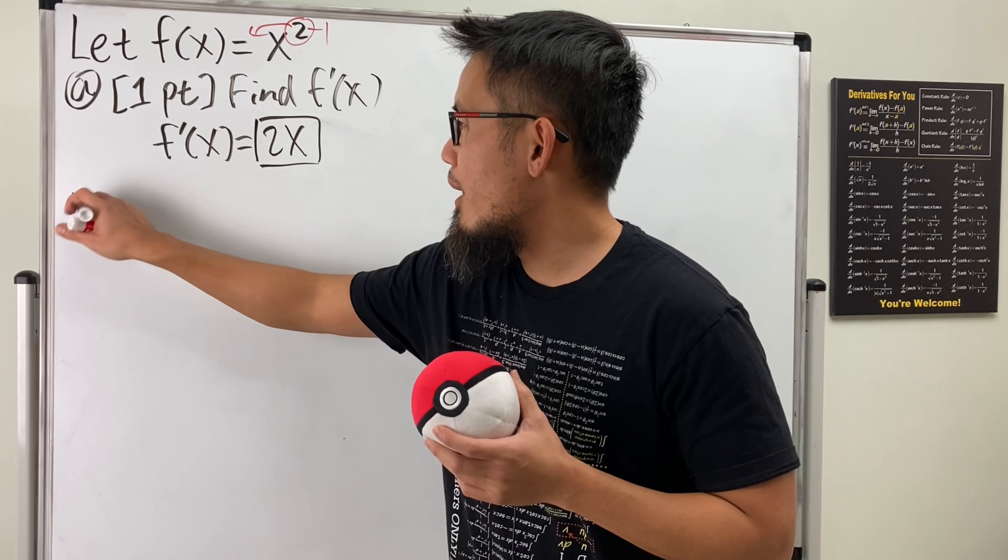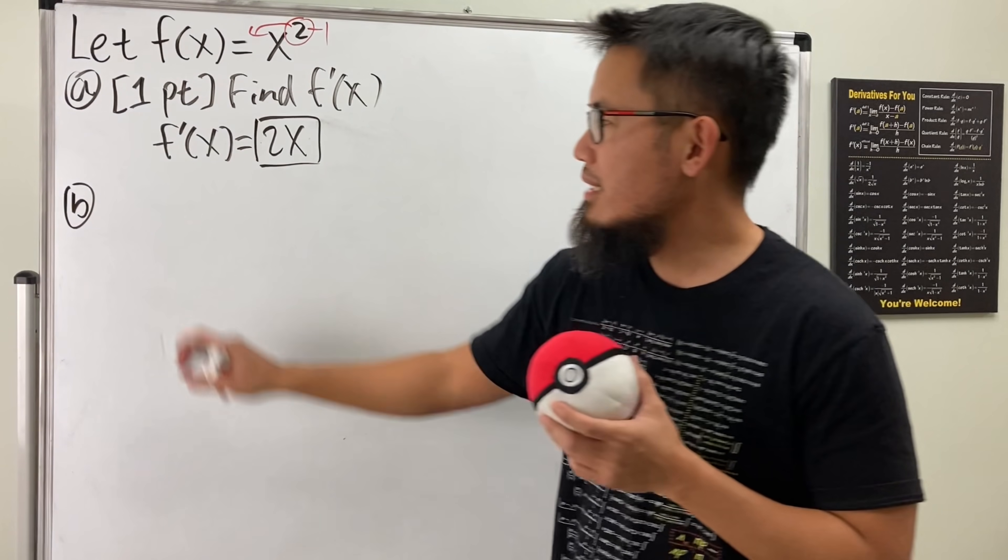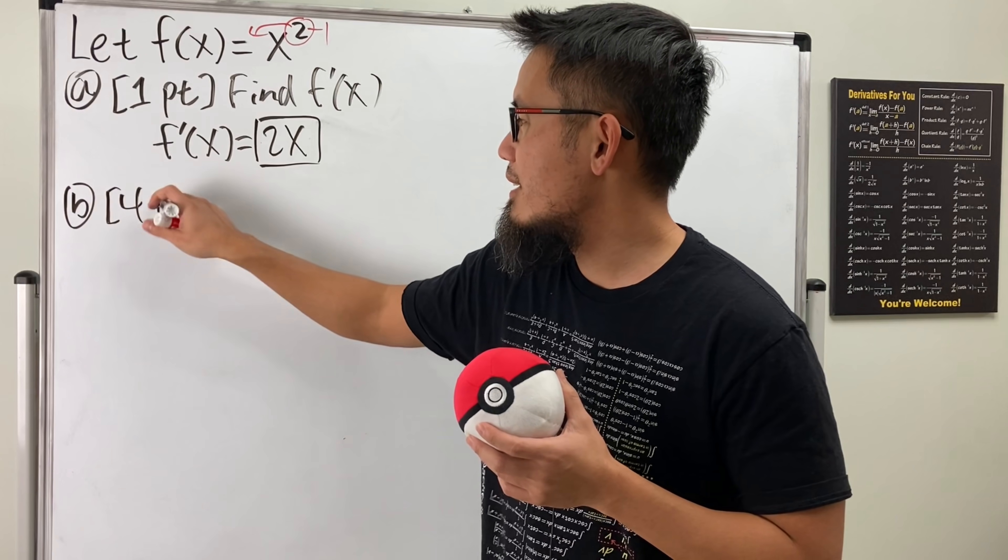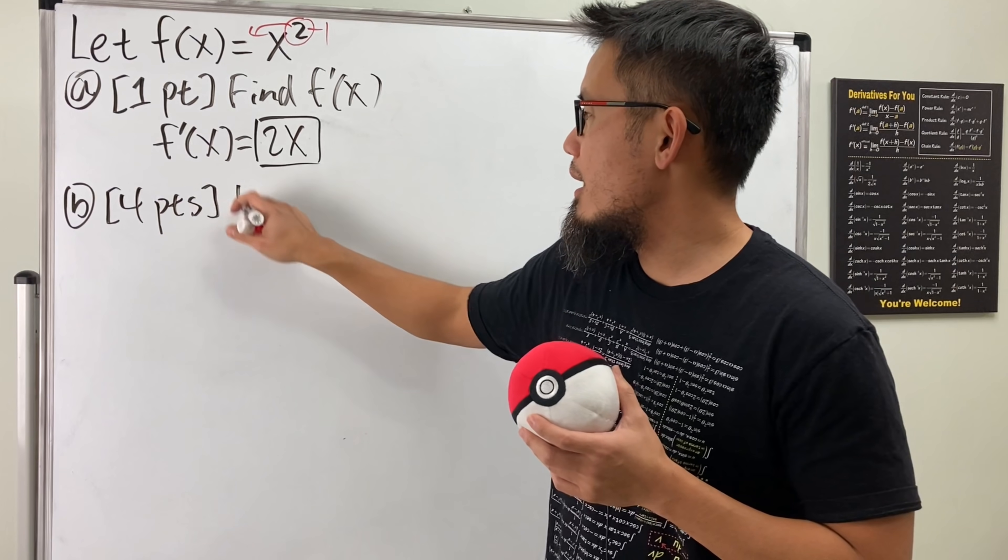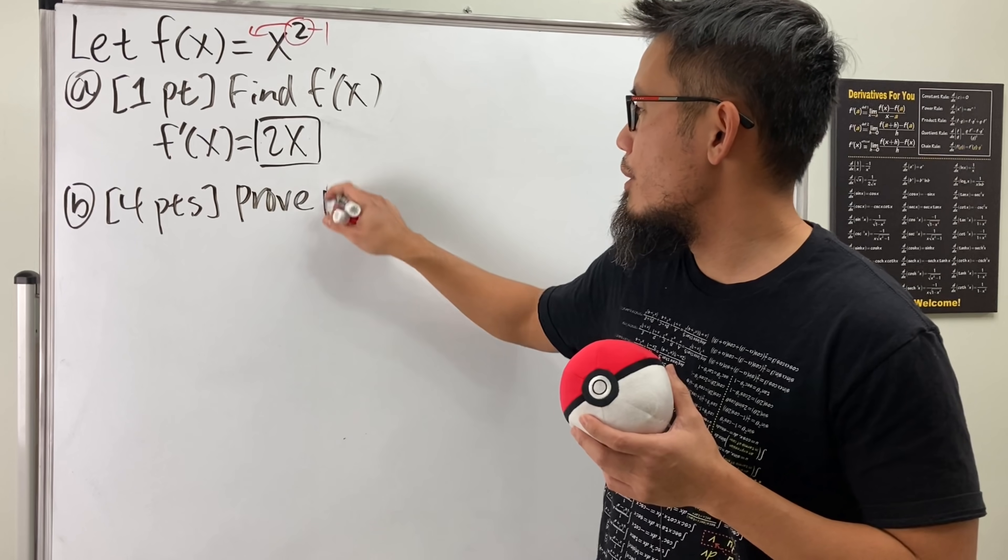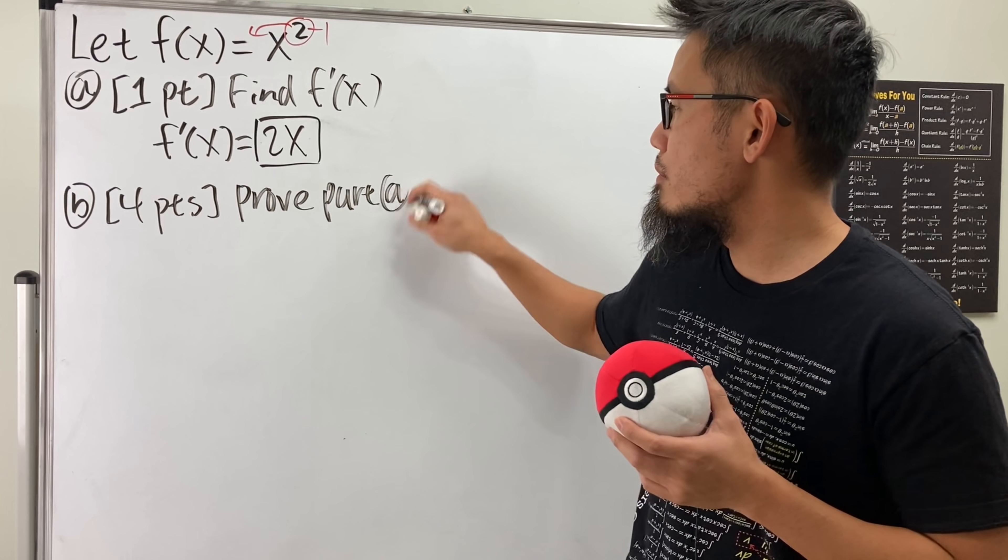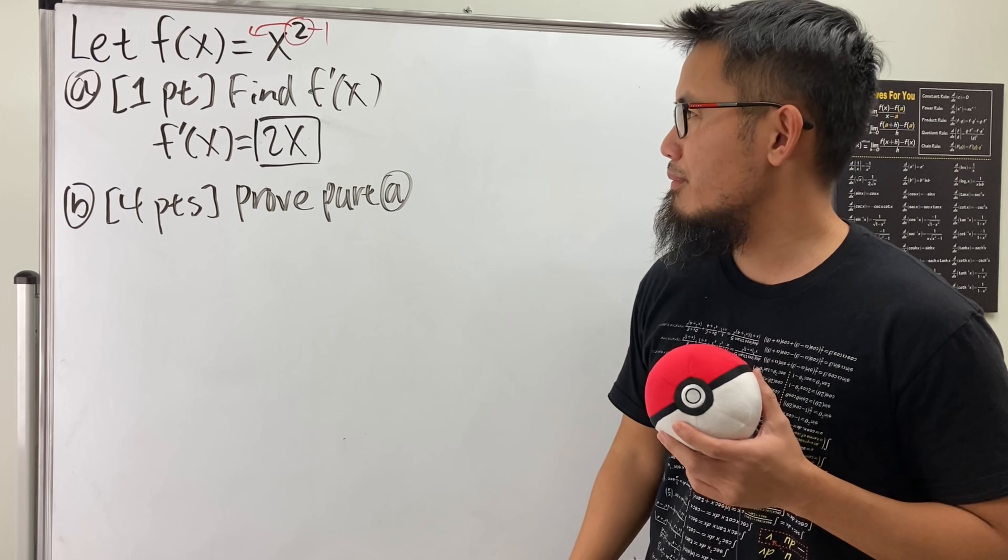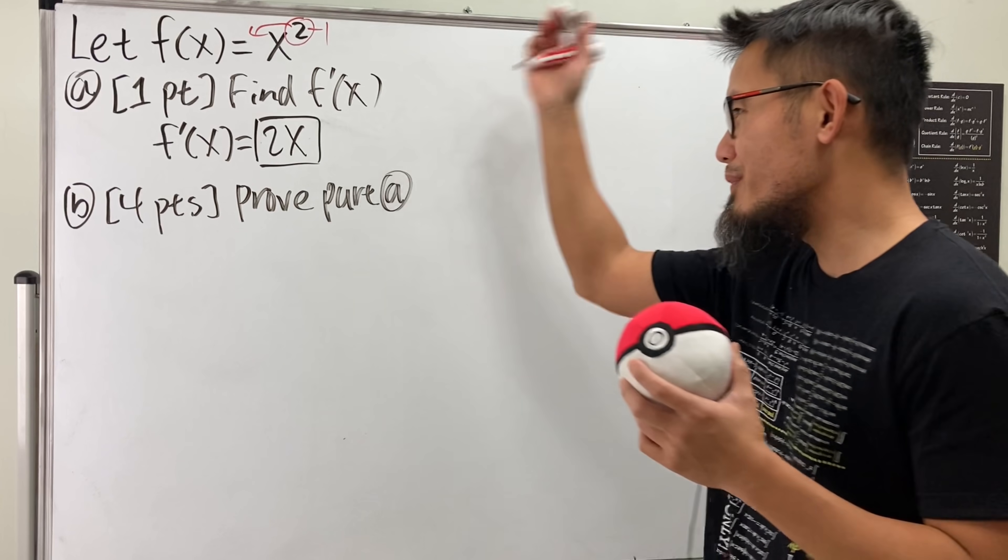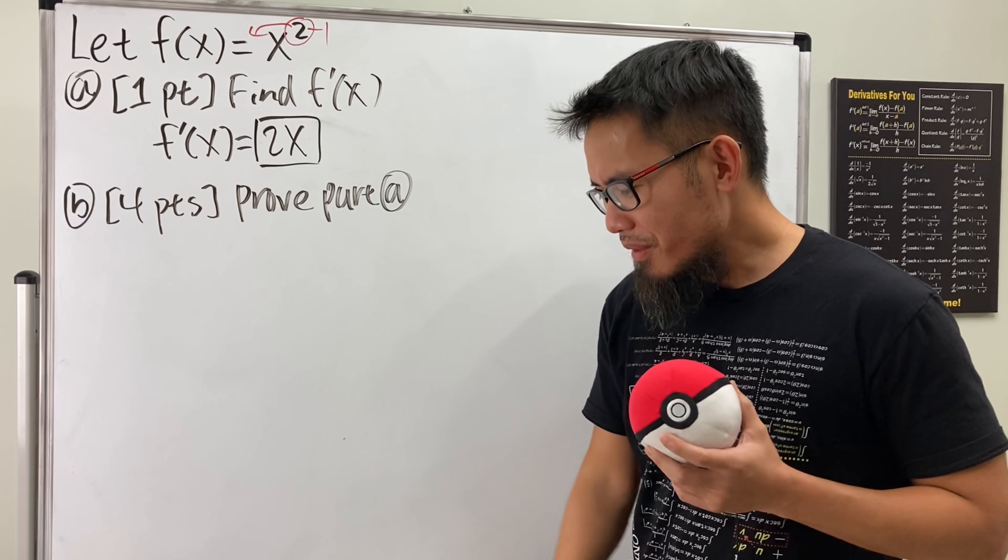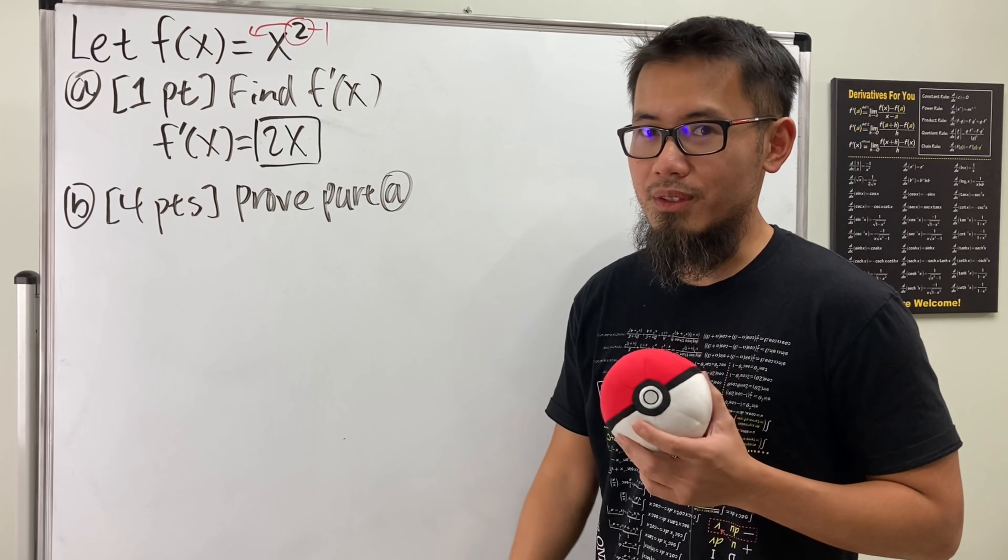Okay, anyway, part B, right? Four points, right? What's four points? Let's go ahead and prove the result from part A. Man, we have to prove this result?